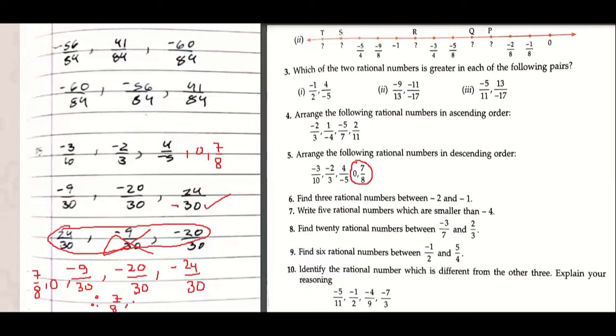So but make sure you write the final answer: seven upon eight, comma zero, minus nine upon thirty was representing minus three upon ten, minus twenty upon thirty was representing minus two upon three.